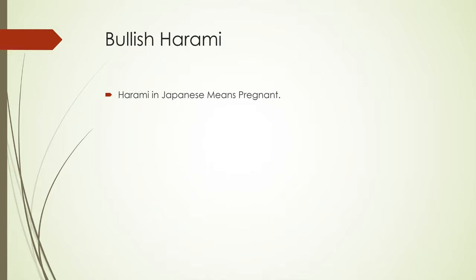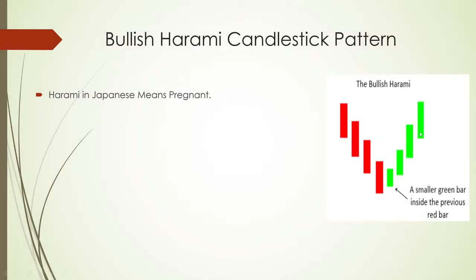So what is the formation? There is a downtrend. There is a big bearish candle. If you look at this candle, you can see a small candle almost inside the previous candle. This inside candle is the Harami. So this is the Bullish Harami.